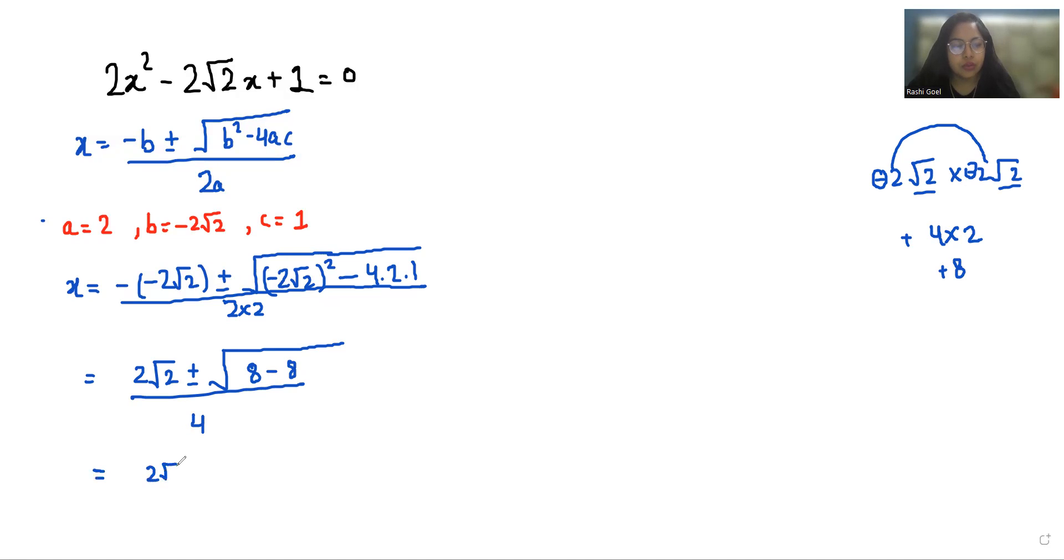So 2√2 ± √0 / 4, this becomes 2√2 / 4. So value of x is 2√2 / 4 which simplifies to √2 / 2.